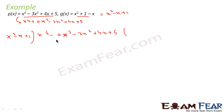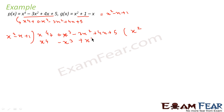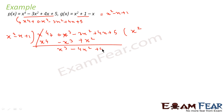Dividing x⁴ + 0·x³ − 3x² + 4x + 5 by x² − x + 1: to get x⁴ from x², multiply by x², giving x⁴ − x·x² = x⁴ − x³ + x². Subtracting from the dividend: 0·x³ − (−x³) = +x³, and −3x² − x² = −4x², bringing down 4x + 5, so we have x³ − 4x² + 4x + 5.